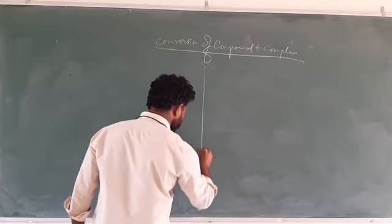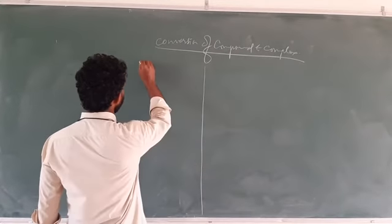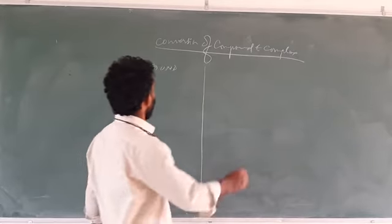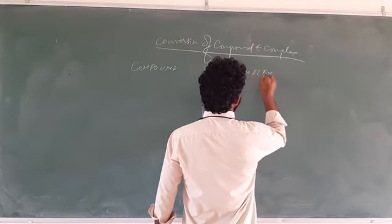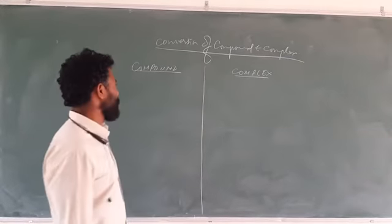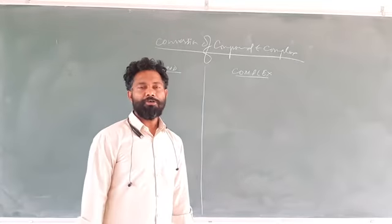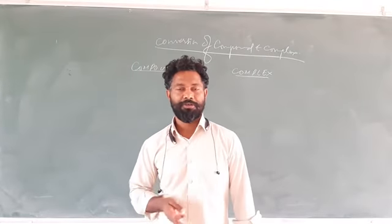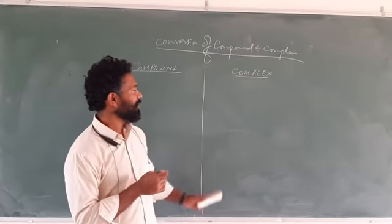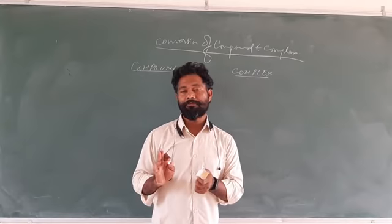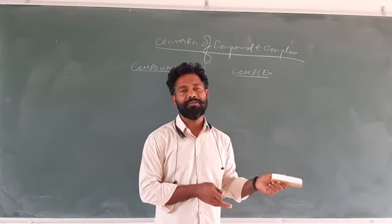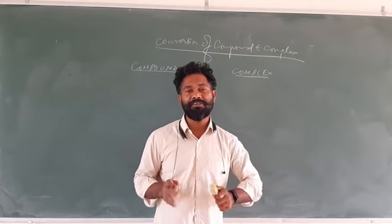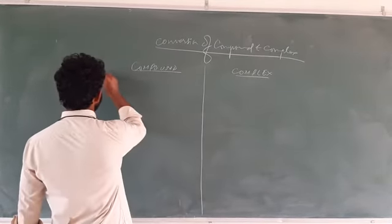So how are we going to study it? We will make two columns. This side we will start with compound sentence, and we will change the compound sentence into complex sentence without changing their meaning. This is to be observed and understood — how a compound sentence is changed into complex sentence. The meaning does not change. This is interesting and you need to understand it.